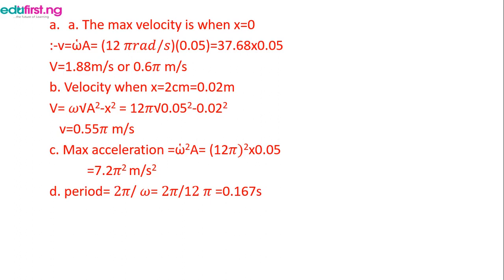Maximum acceleration equals omega squared times a, so it equals 12 pi squared multiplied by 0.05, giving 7.2 pi squared m/s². The period equals 2 pi over omega, so our answer equals 2 pi divided by 12 pi, which equals 0.167 seconds.